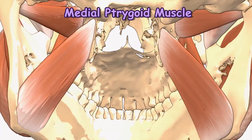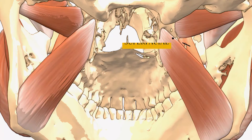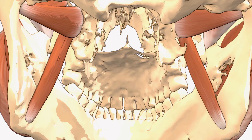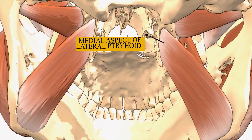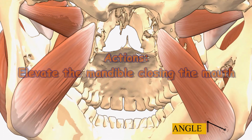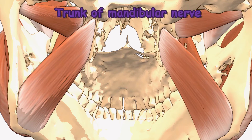The medial pterygoid muscle has a quadrangular shape with two heads — deep and superficial. It is located inferiorly to the lateral pterygoid. The superficial head originates from the maxillary tuberosity and the pyramidal process of the palatine bone. The deep head originates from the medial aspect of the lateral pterygoid plate of the sphenoid bone. Both heads attach to the ramus of the mandible near the angle of the mandible. Its action is to elevate the mandible, closing the mouth. Innervation is by the trunk of the mandibular nerve.